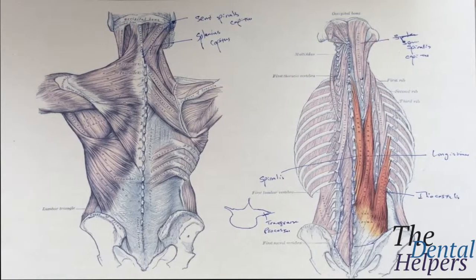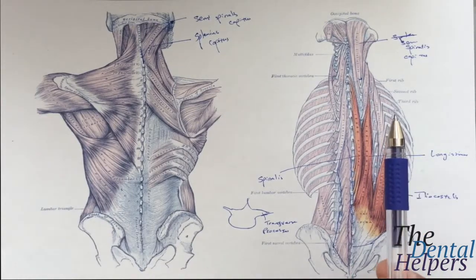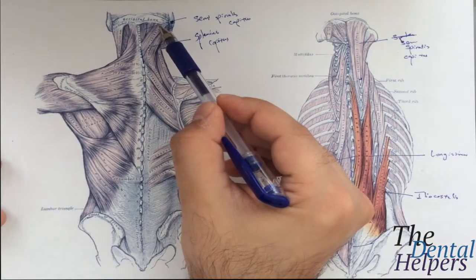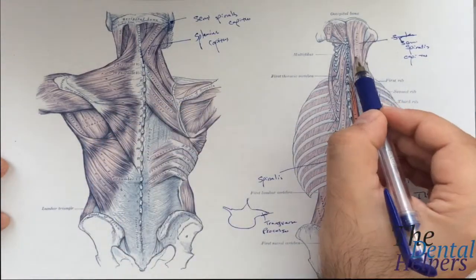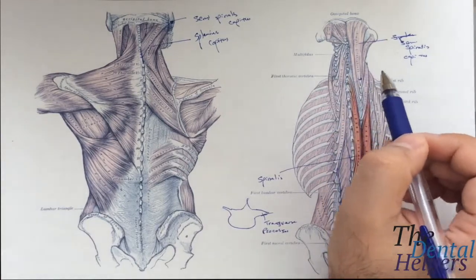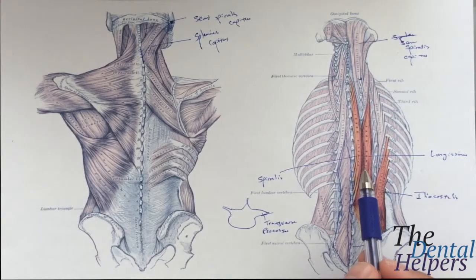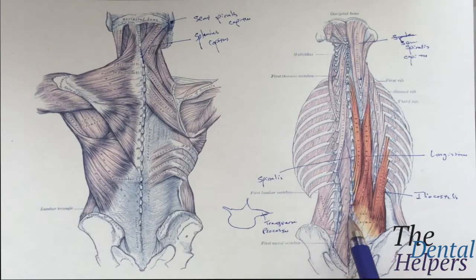That covers the deep back muscles and neck muscles. Going superficial to deep for the neck: splenius capitis, semispinalis capitis, and the deepest is semispinalis cervicus. For the deep back muscles, medial to lateral within the erector spinae: spinalis, longissimus, and iliocostalis. Deep to the erector spinae are the multifidus muscles. If you have any questions or comments, please leave them below. If you like the video, hit thumbs up, and if you like the channel, please subscribe.